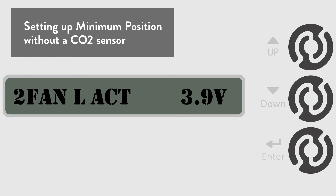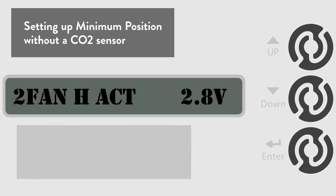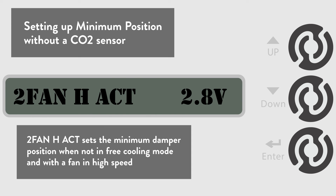Now go to the 2-fan H-ACT menu. This will set the economizer actuator voltage or the damper position for allowing minimum position outside air intake when the fan is in high speed. The default is 2.8 volts, but for this example we are going to change it to 3.0 volts.